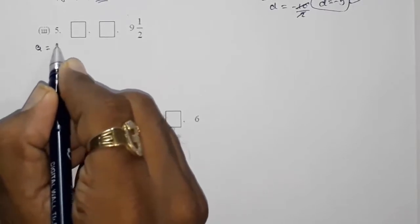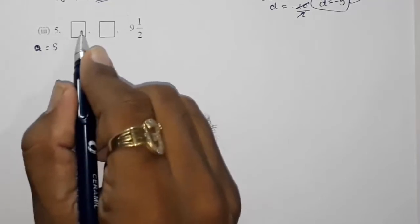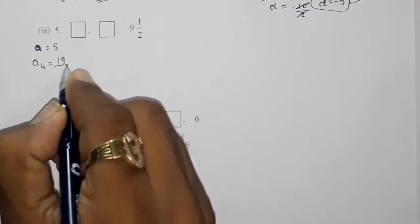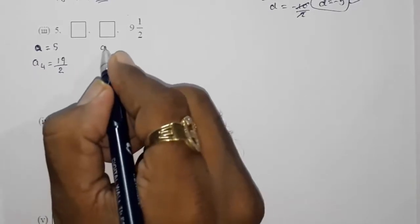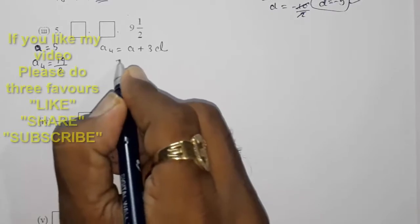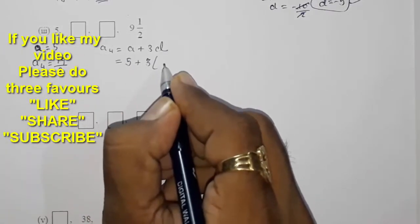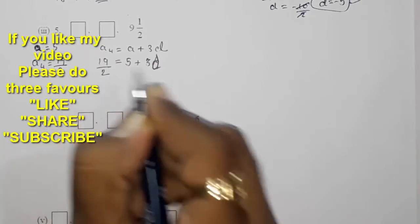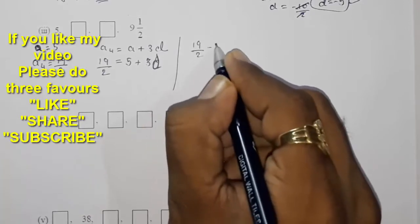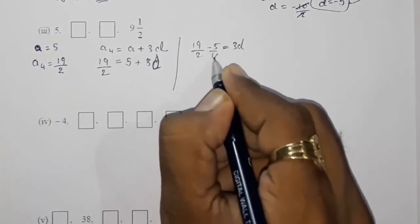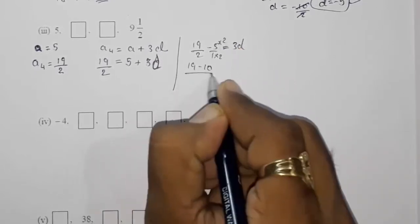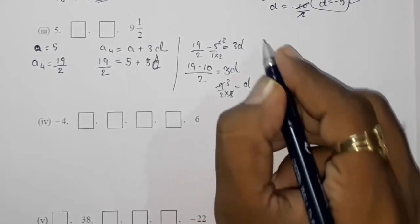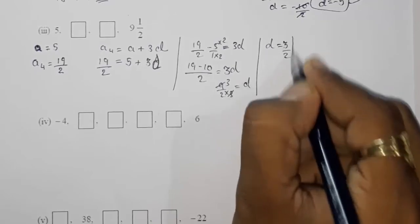In part three, they have given the first term a = 5, and the fourth term a4 = 9½, which can be written as 19/2. Using a4 = a + 3d: 19/2 = 5 + 3d. Taking 5 to the other side: 19/2 − 5 = 3d. Finding LCM: (19 − 10)/2 = 3d, so 9/2 ÷ 3 = d, giving d = 3/2.